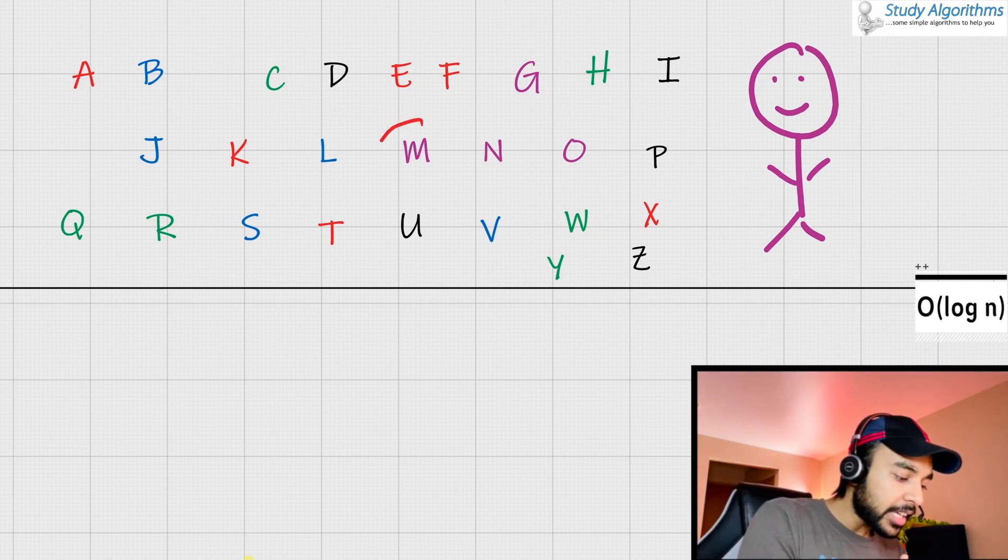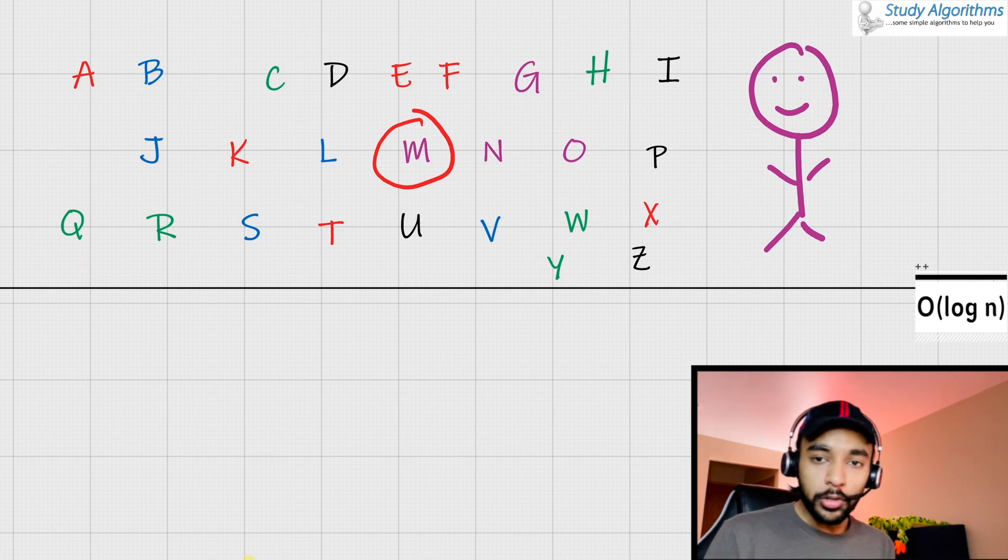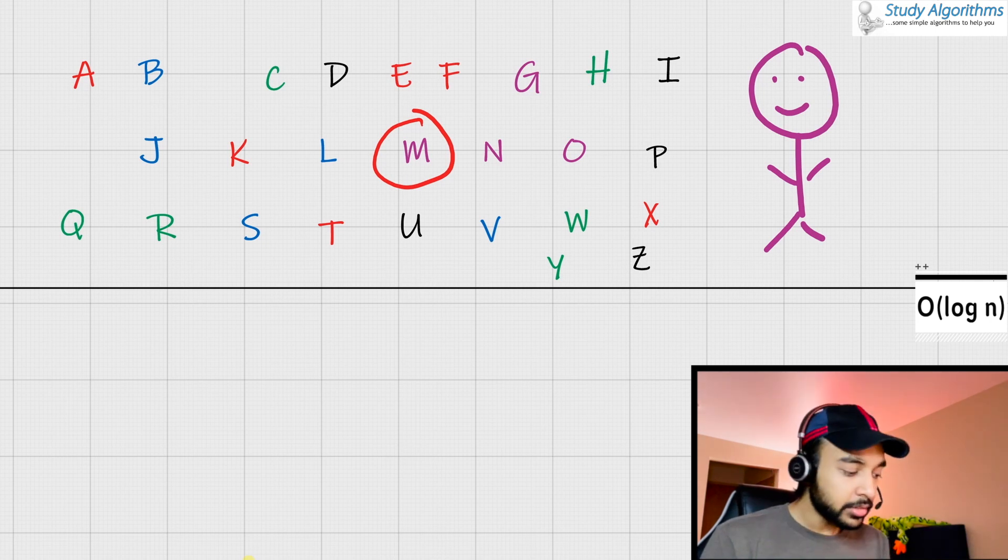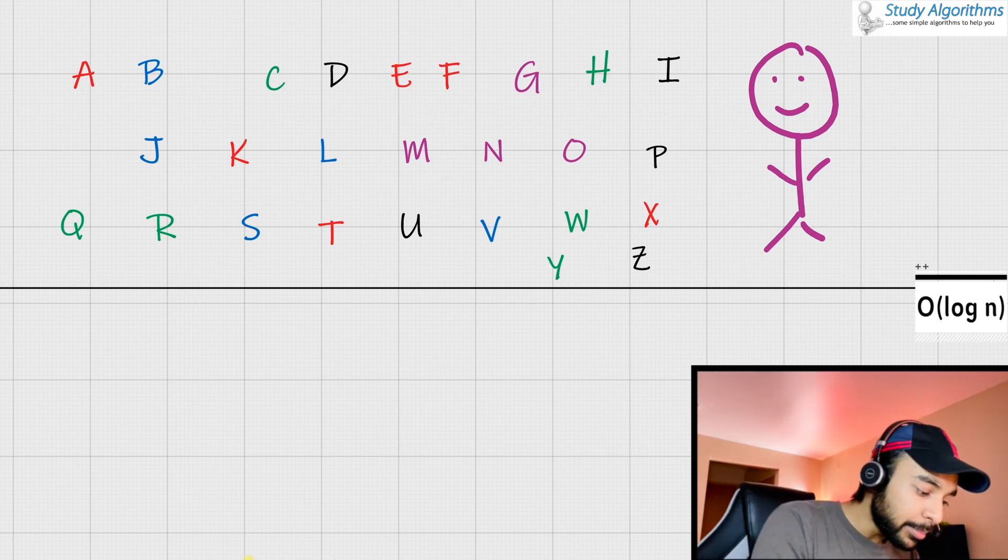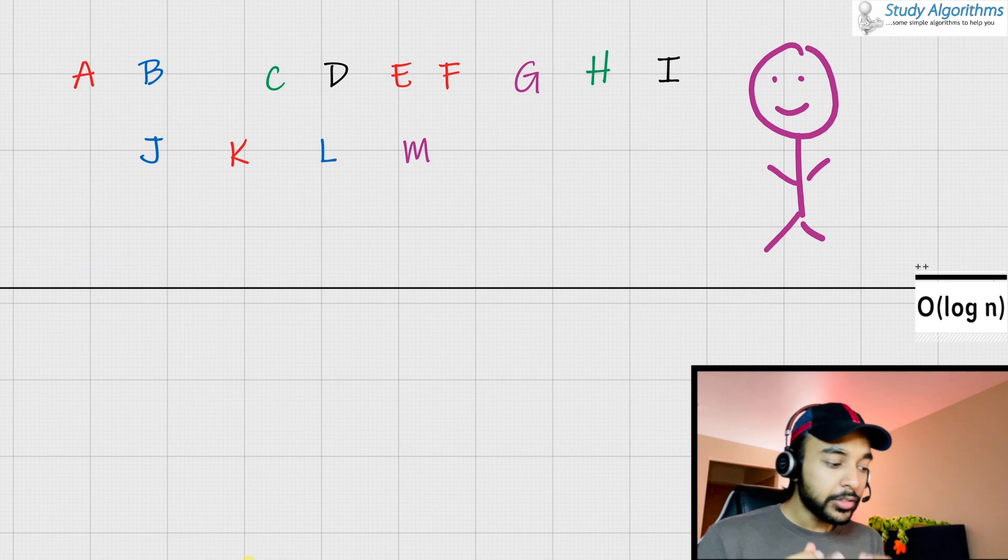Since M looks like the middle element in the entire alphabetical sequence, what you can ask me is, if the character that you have guessed comes before M or after M. So, suppose I say to you that the character that I'm thinking comes before M. What does that mean? That simply means that you can discard out all of these characters without any hesitation. So now, you are left with only these characters.